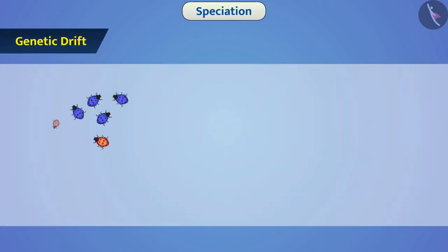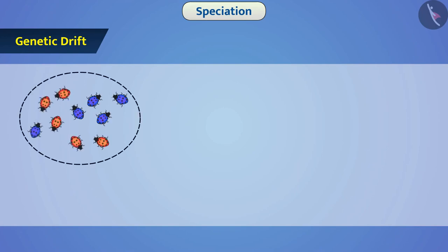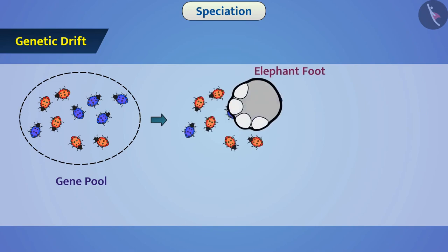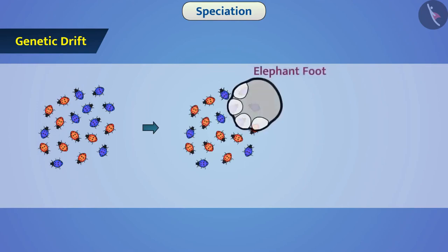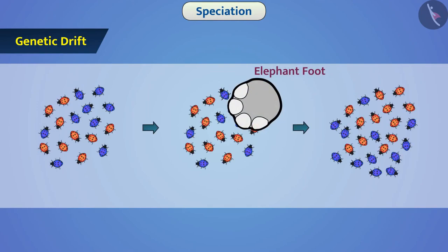Genetic drift: in the population of an organism, there are different alleles for any trait. The set of alleles present in the organisms of a species is called its gene pool. Due to events like natural calamity, there are changes in the frequency of alleles which happen solely by chance — we call it genetic drift. Due to this, the new population becomes genetically different from the old population. Often, the evolution of the new population takes place such that there is development of new species. If the population of the organism is large, then there is negligible impact of random events on allele frequency, so in such cases we cannot see genetic drift.